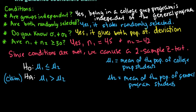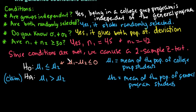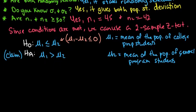You could also have written the null hypothesis as mu one minus mu two equals zero, which says there is no difference between the means. This will be important in a moment when we go over the formula.